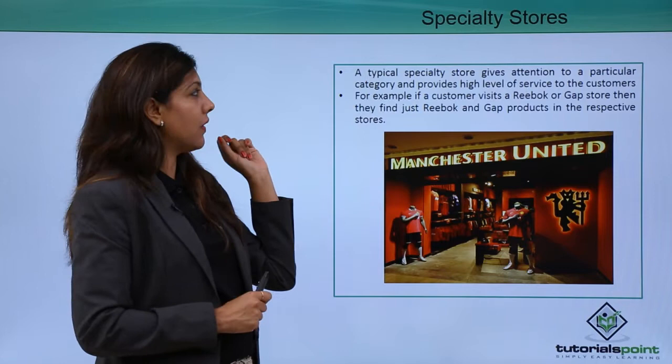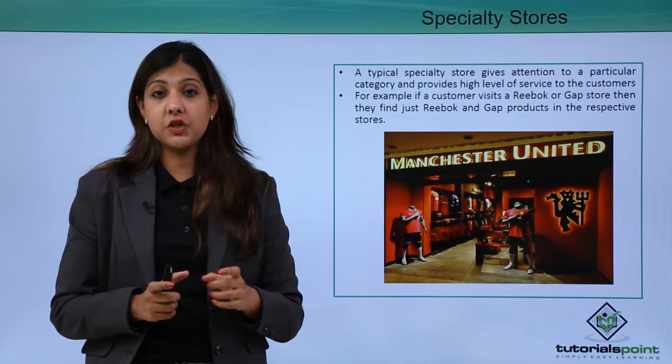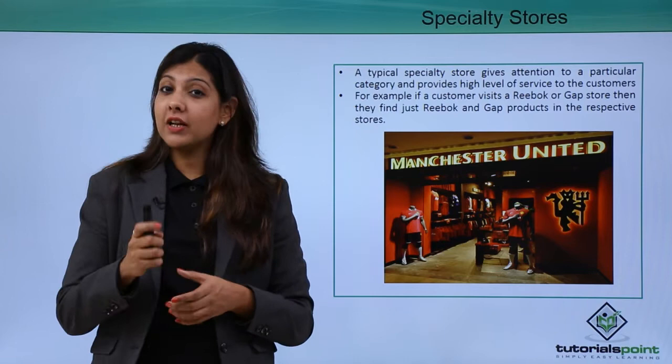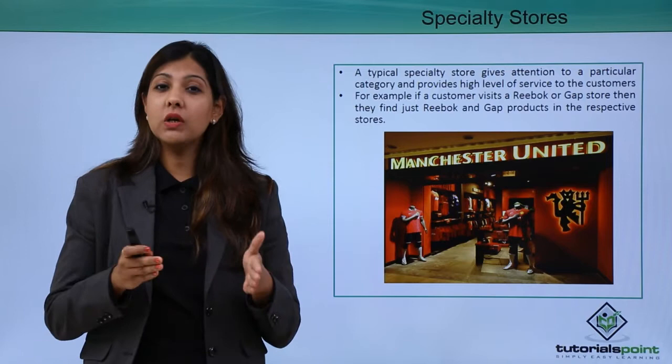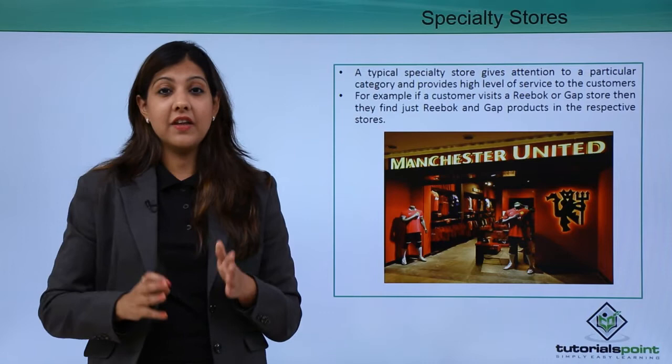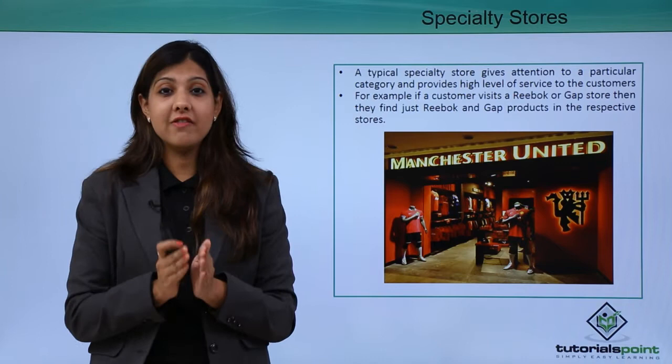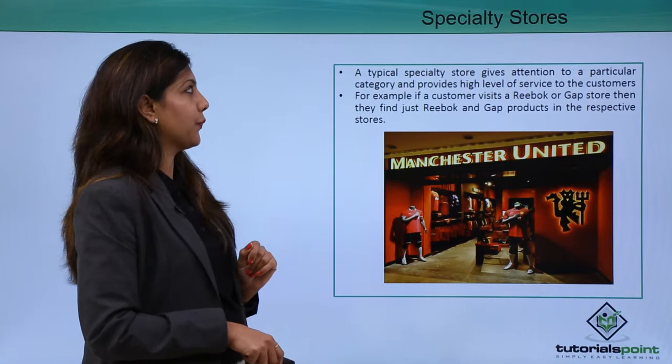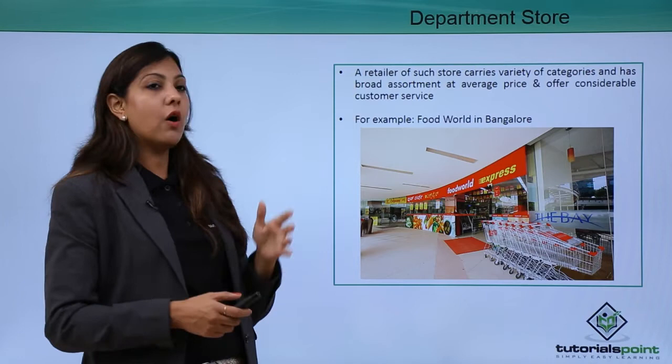Now moving into organized retail — a specialty store sells a particular category of product and is known for that specialized category. For example, if you want to buy Gucci, Reebok, or Nike, you go to a specialty store that sells only that brand. They are very specific to the category they sell.